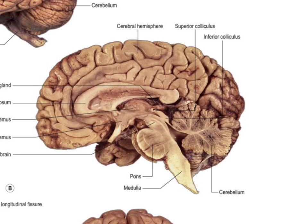There are a couple of other cortical features I want to draw your attention to. This part of the cortex sitting just above the corpus callosum is called the cingulate gyrus. This has some clinical importance, because a space-occupying lesion in one hemisphere can push the cingulate gyrus across to the other half of the head underneath the falx cerebri. So the cingulate gyrus can get damaged in herniation when you've got a space-occupying lesion in, say, the left hemisphere.